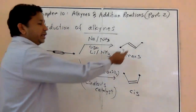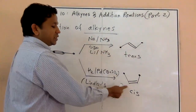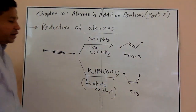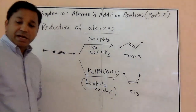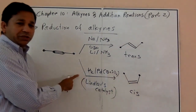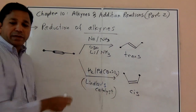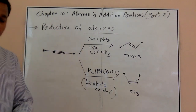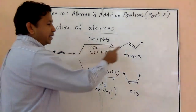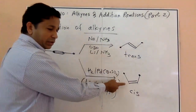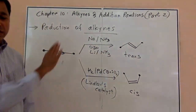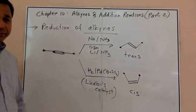So you choose accordingly: if you want trans, use sodium or lithium in liquid ammonia; if you want cis, use the Lindlar catalyst. This is a very important reaction — make sure you keep in mind how to selectively convert a triple bond into a cis or trans double bond.